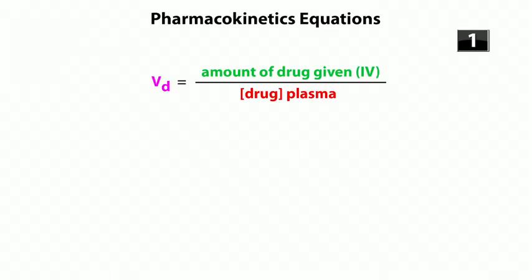Let's go over the three-question warm-up for PharmBasics 11. First question: what are the four main pharmacokinetic equations? Make sure you know these. Volume of distribution equals the amount of drug given in IV form divided by the concentration of that drug in plasma — so Vd equals D over C.